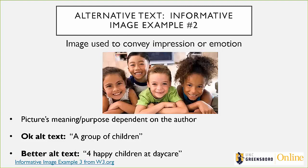Here's another example of an informative image — where you might use an image to convey an impression or emotion. Your pictures are going to be dependent on how you define the purpose of that image. In this case, it's a picture of four children. If this is on a website where the author wants to promote their daycare and show that children will be happy there, the better alt text would be 'four happy children at a daycare.' That way the screen reader user knows the purpose — not only is it a group of children, it's a group of happy children at a daycare.